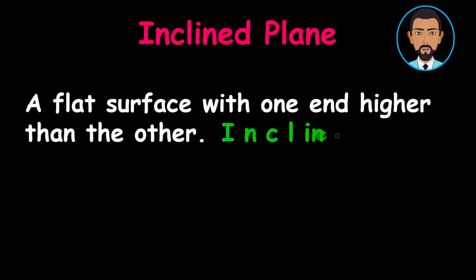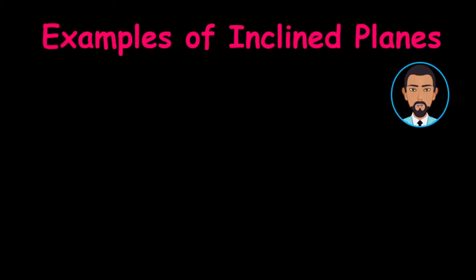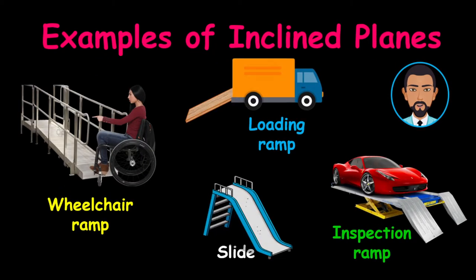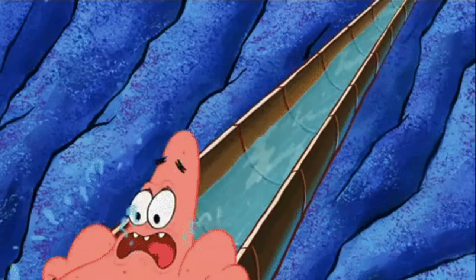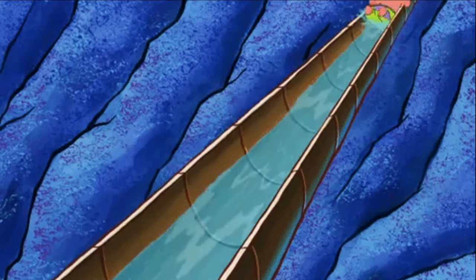Let's now slide into the definition for inclined planes. Do you know that inclined planes can be fun? Yes, because they are used to make slides and skateboard ramps. An inclined plane is a flat surface with one end higher than the other. Inclined planes are used to move objects easily from a low point to a high point. Some examples of inclined planes include wheelchair ramps, loading ramps for trucks, playground slides, and inspection ramps in mechanic shops. I know you can't wait for summer to enjoy the water slides — I am definitely looking forward.